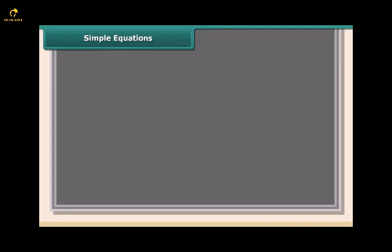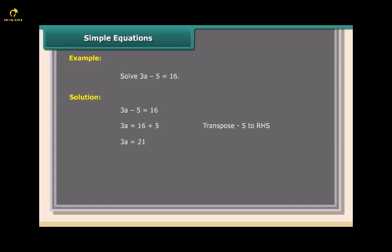Example: Solve 3A - 5 = 16. Solution: 3A - 5 = 16. Transpose -5 to RHS: 3A = 16 + 5 = 21. Transpose 3 to RHS: A = 21/3 = 7.